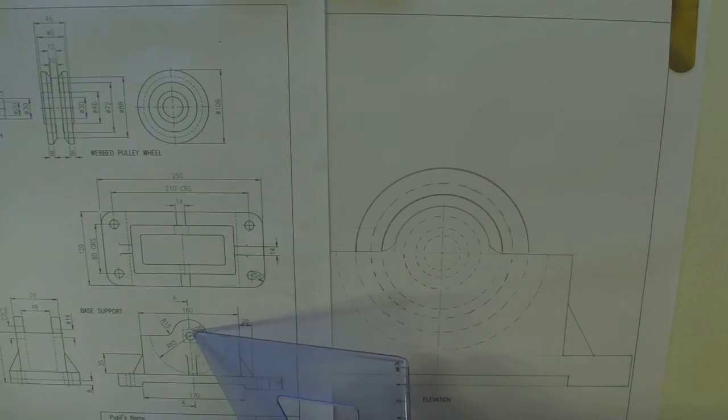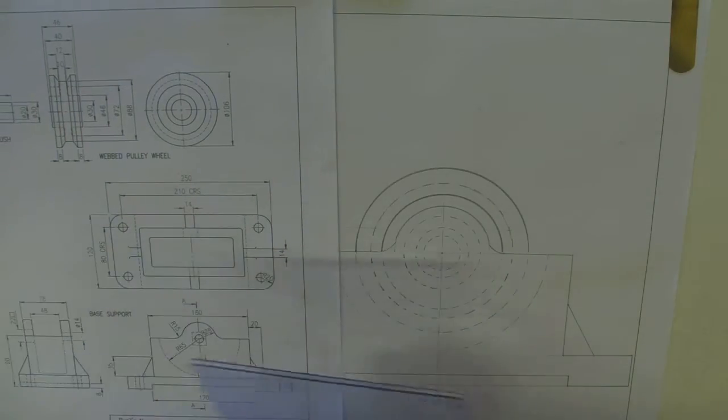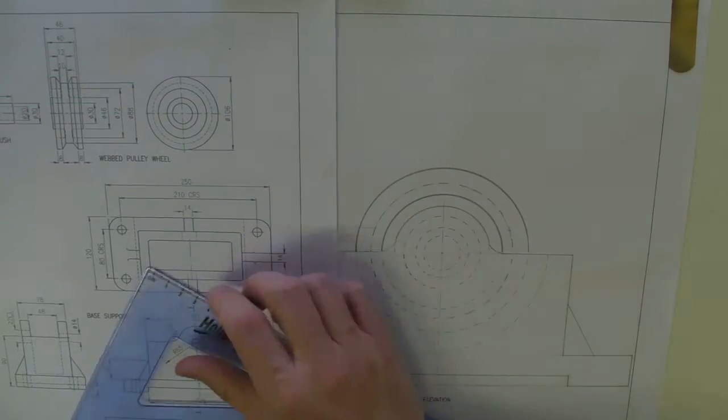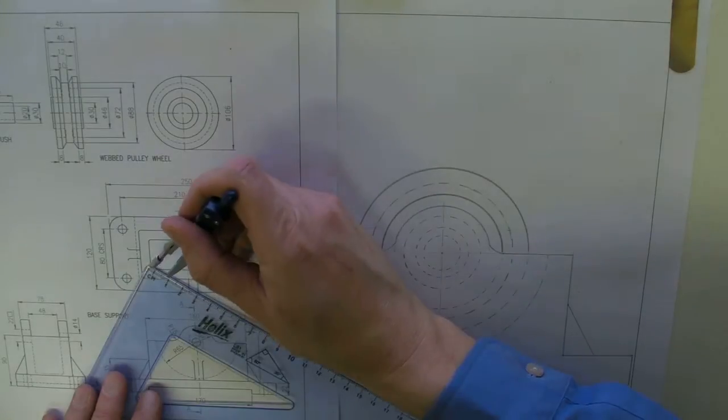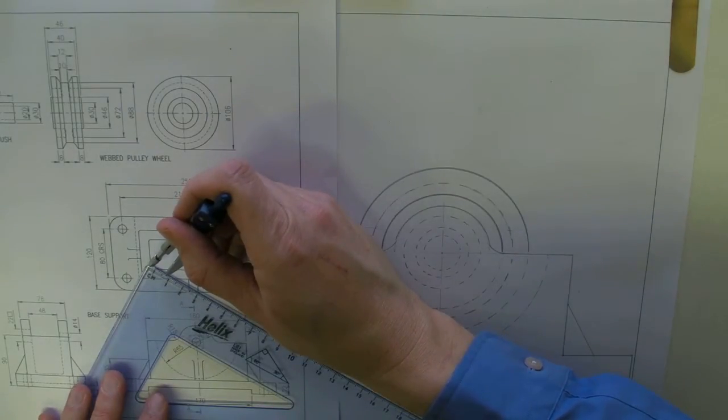Right, what is the size of this hole? That wee hole there. Obviously that's going to be a solid hole. Well, it tells you that it's 14. So that's going to be 7. So I'm going to measure it to 7.